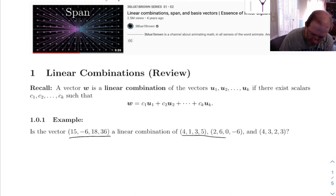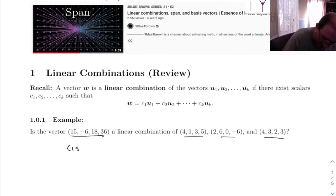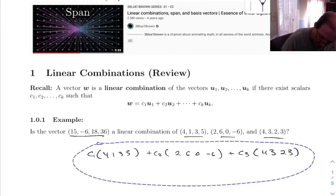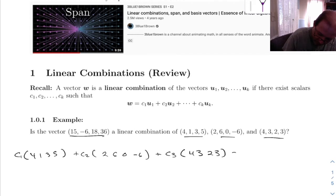This says, is this vector a linear combination of these three? The way to do that is to set this vector up as a linear combination of those. I'm going to put this first: C1 times (4, 1, 3, 5), C2 times (2, 6, 0, -6), C3 times (4, 3, 2, 3). So we'd set this up as this equals (15, -6, 18, 36).